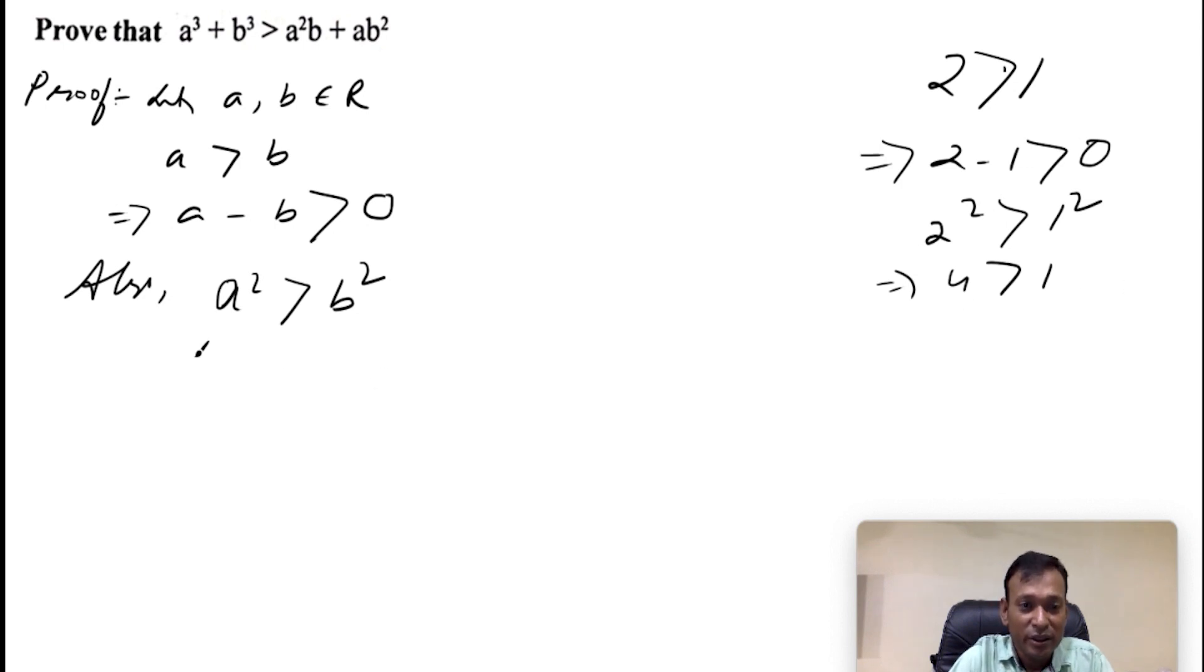Now, we will multiply a minus b on both sides. a² times (a minus b) greater than b² times (a minus b). On multiplying a minus b, there is 2 minus 1, which is 1. So if we multiply these two positive numbers to both sides of inequalities, the sign of inequality won't change.